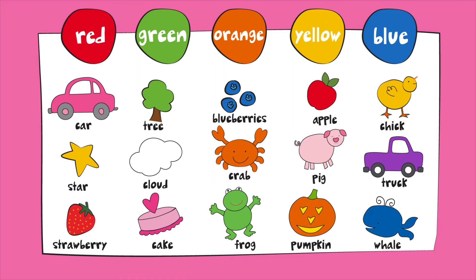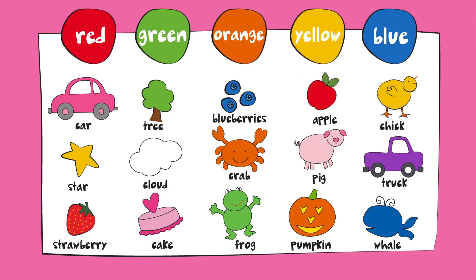Now, can you find all the things on this page that are yellow? There's a star that's yellow and a chick. One last color — can you find all the things on this page that are blue? Take a minute. Do you see the blueberries? And the whale? Great job!